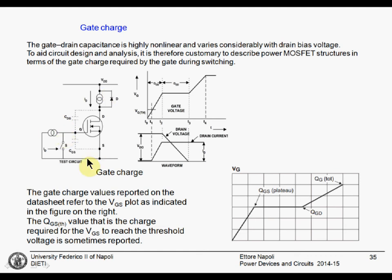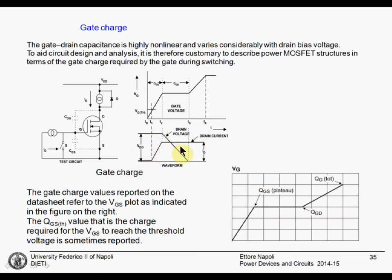This is the typical test circuit for the gate charge. There is a switch and a constant current flowing to switch the device on with a given current. You then measure the gate voltage behavior: it increases linearly up to the Miller plateau, then stays constant during the discharge of the gate-to-drain capacitance, then keeps increasing. Meanwhile, the drain voltage and drain current behave correspondingly.